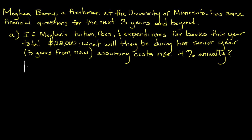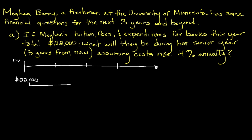Whenever I approach this type of question, it always helps to be really organized. The first thing I like to do is draw a little bit of a timeline to represent visually what we're actually trying to do. Notice we're here — this is what we call present day, or PV, present value. In present day we've got $22,000 in costs, and we need to know in one, two, and three years what they're going to be.